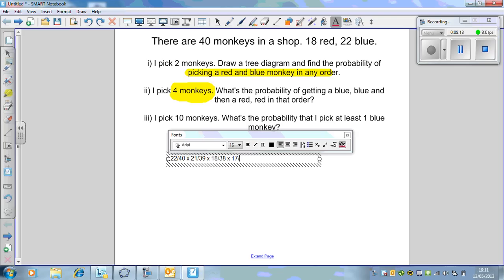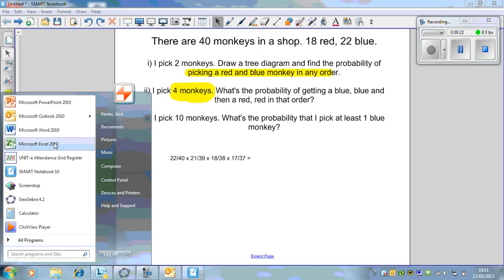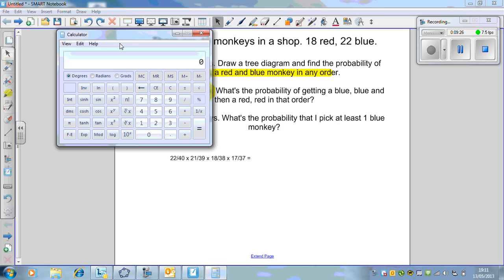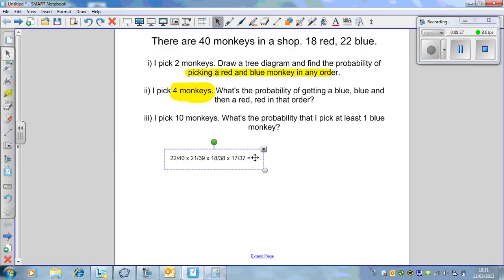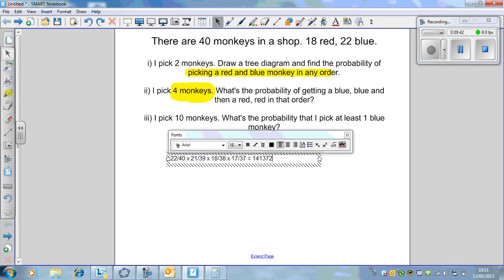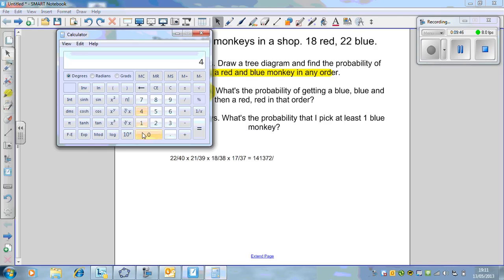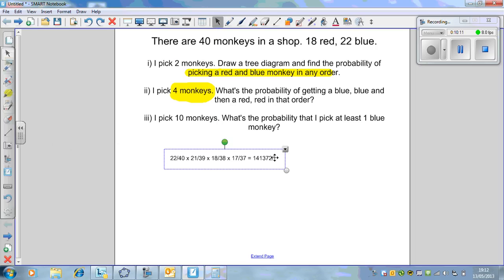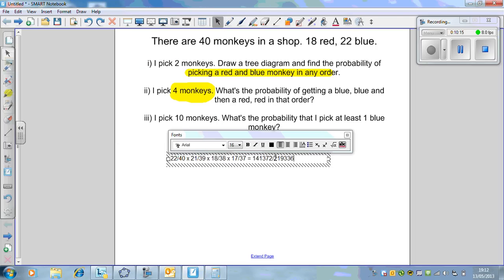The final red, we've already picked one out, so it'll be 17 times 37. This is our probability which we need to calculate. We can just whip this straight into our calculator. 22 times 21 times 18 times 17 equals 141,372, divided by 40 multiplied by 39 multiplied by 38 multiplied by 37, which is 2,193,360.